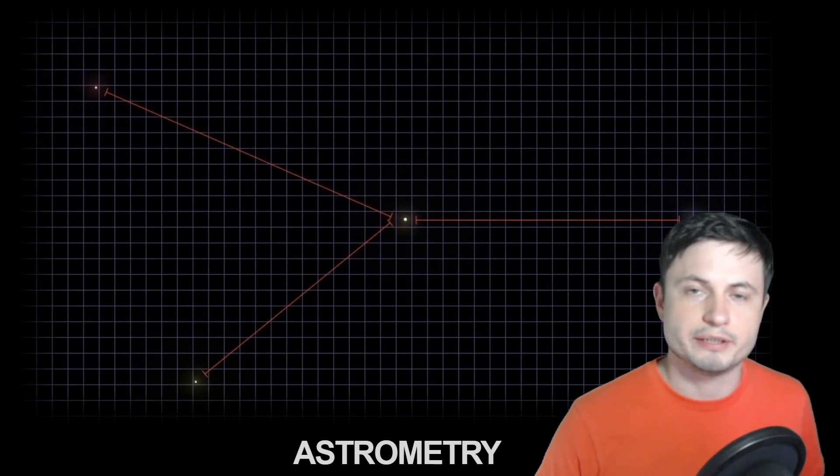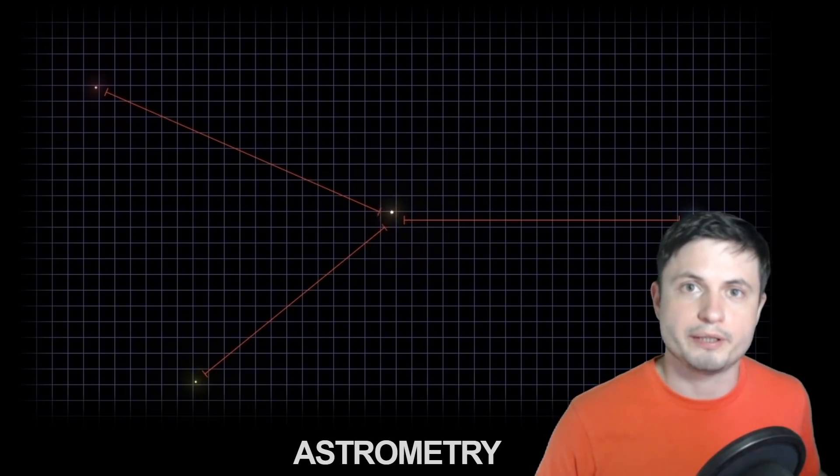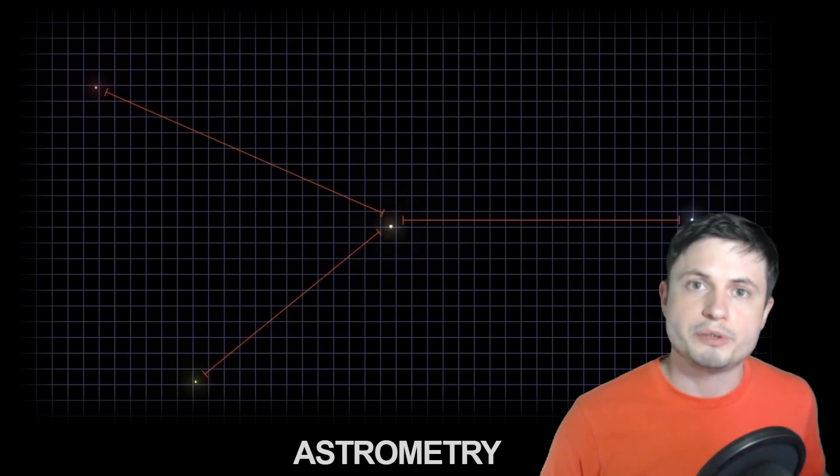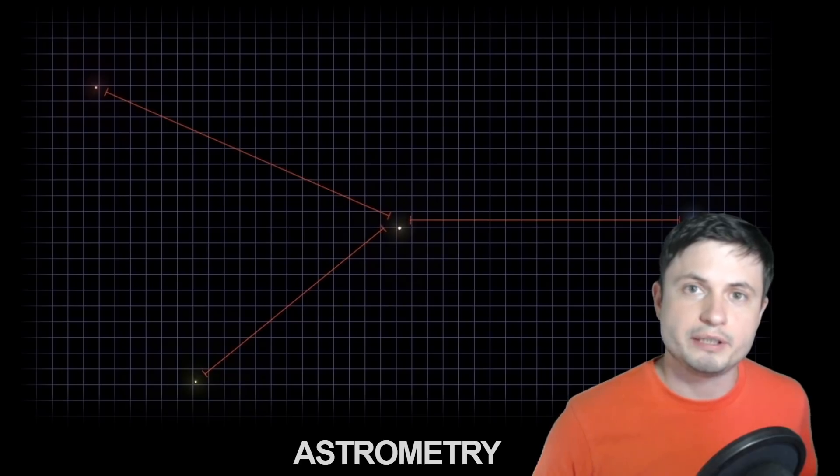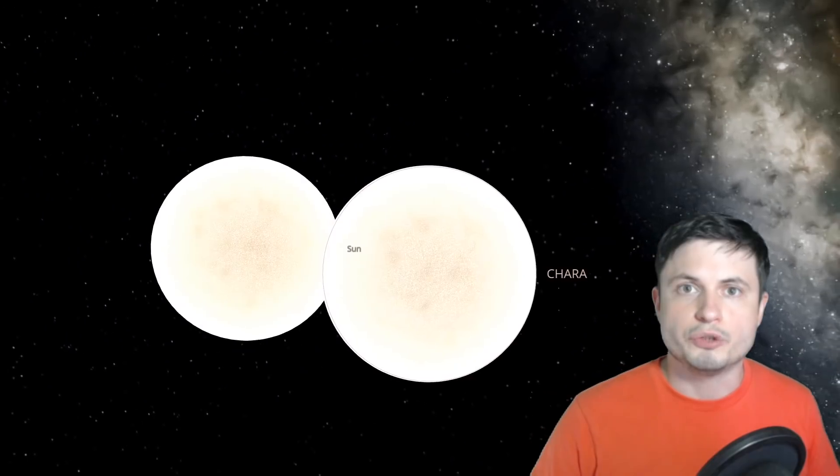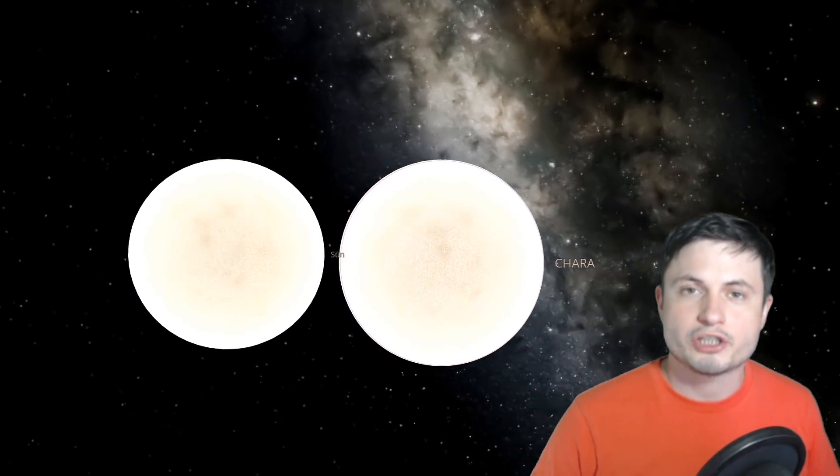It means that if planets do exist in this star system they are probably really small, possibly similar to Earth and Mars in size. And they also could be relatively far from the star, even in the habitable zone. So not being able to detect planets so far is actually a really good thing. And that's because most of the planets we've discovered so far are usually extreme. They're not the planets we would be able to ever settle.